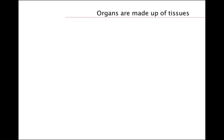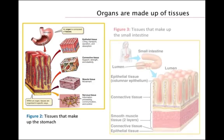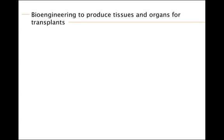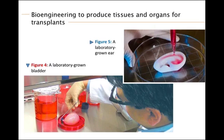In all but the simplest animals, tissues are arranged into organs that perform specific functions. The heart, for example, while mostly muscle, also has epithelial, connective, and nervous tissues. Figures 2 and 3 illustrate the tissue components of the stomach and intestine. Notice that each organ is composed of various tissues that work together as a group. Scientists are increasingly turning to bioengineering to repair or replace damaged tissues and organs, including artificial skin for burn victims and diabetic patients with skin ulcers. Figure 4 shows the bioengineering of a laboratory-grown bladder, and Figure 5 shows the construction of an ear within a petri dish.